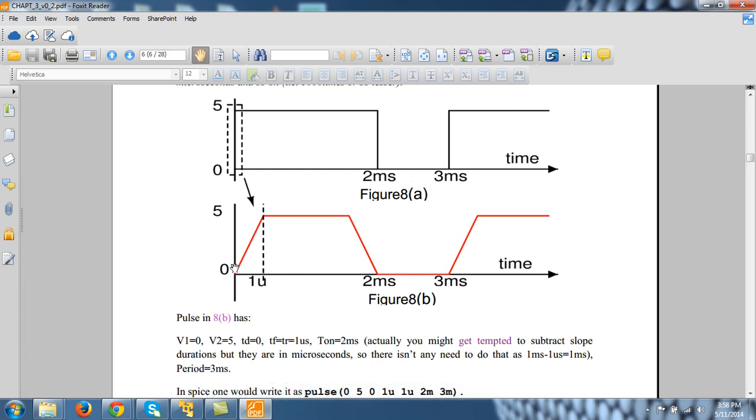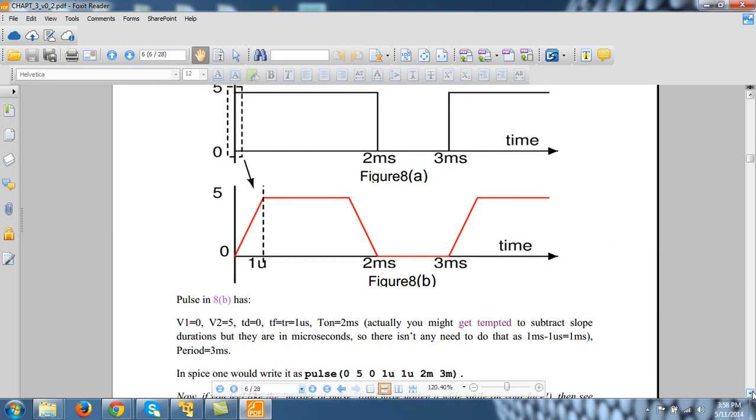The one level of voltage is 0, other level is 5. You can see it from here. 0, 5 and shift from origin, the time delay, is 0 because it starts right at the origin. There is no difference between origin and the point where it starts rising.